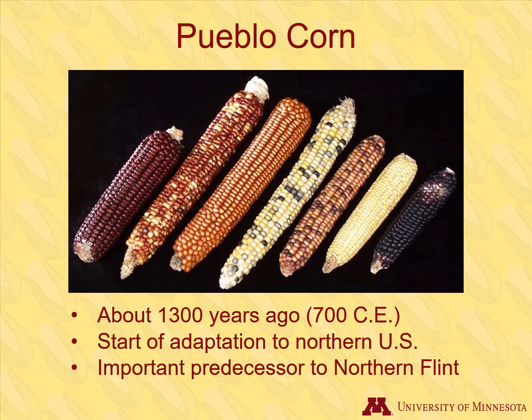How did a tropical plant become adapted to northern regions? Around 1,300 years ago, there was an eight-row soft flour strain of corn in northwest Mexico called Pueblo corn that was adapted to cooler environments, easy to grind, and highly productive. Pueblo corn eventually made its way north into the United States and southern Canada. It was the precursor for the flint and flour corn used by Native Americans in the Midwest and New England areas. It eventually became what we call northern flint, a hard starch type of corn that plays an important role in the history of dent corn.